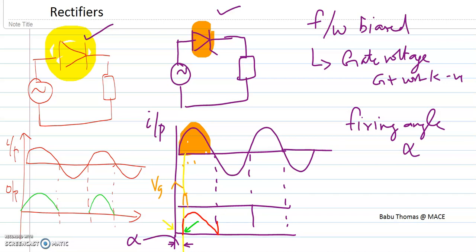Our discussion was at π/4, so here it is π/4. It can be π/2, it can be 3π/4 — like that, any value it can obtain.